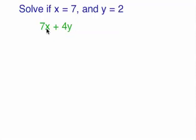So 7x plus 4y, we're replacing this x with 7 in brackets. So the 7 is replaced in brackets, and the y, which is 2, the y is replaced with a 2 in brackets.